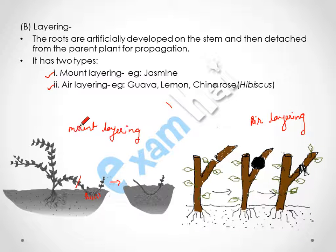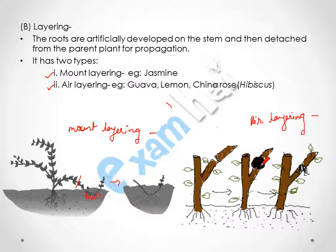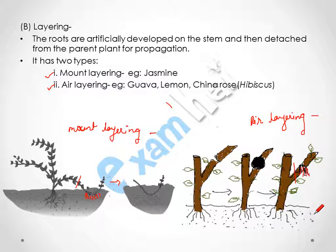In air layering, a cut is made on the stem and it is covered with moist soil, then covered with polythene so that moisture is retained properly. After a while, roots will develop, and when roots have developed, we cut it from that point, take this part, put it into the soil, and a new plant will develop.